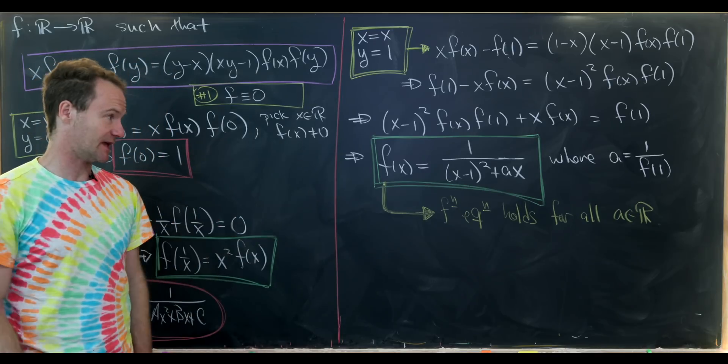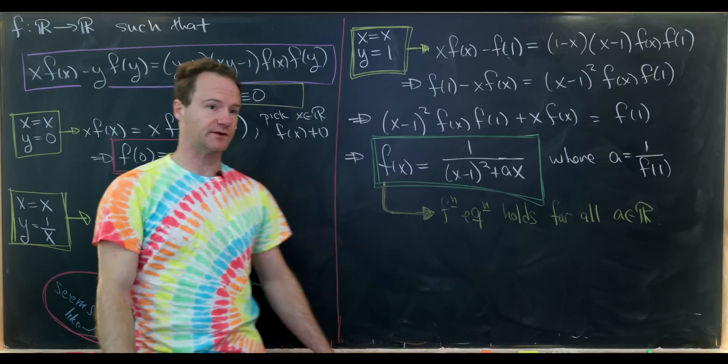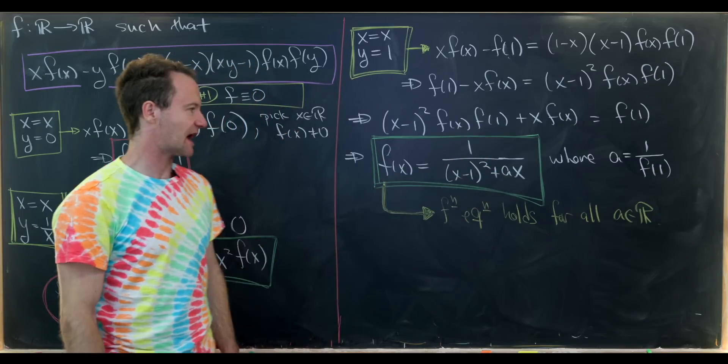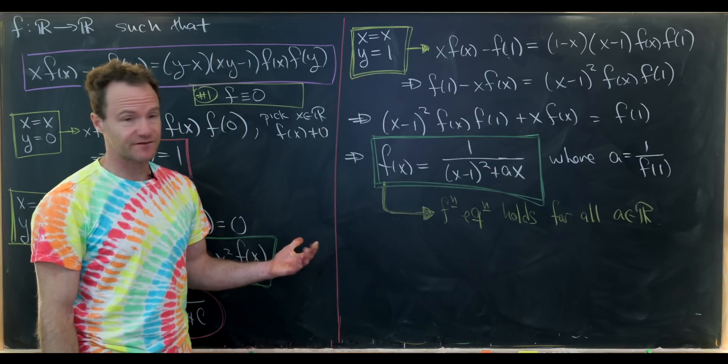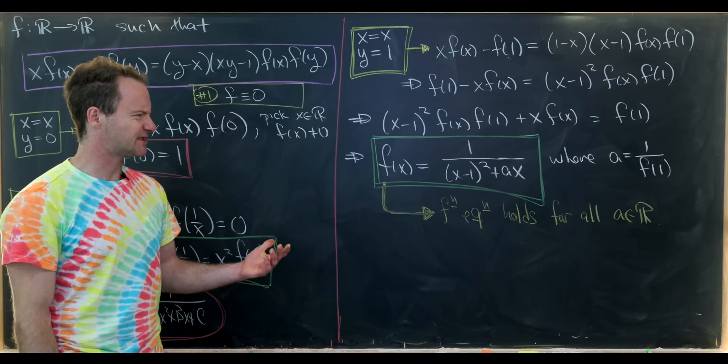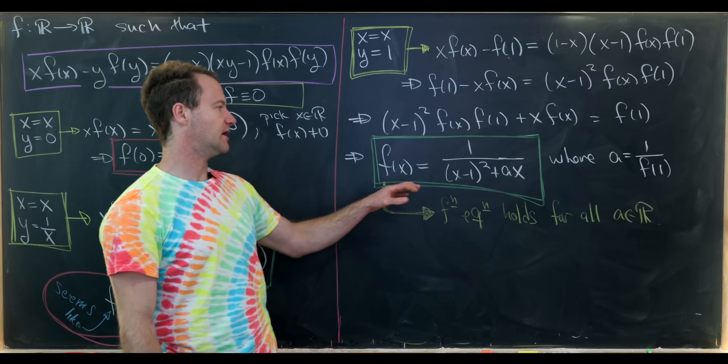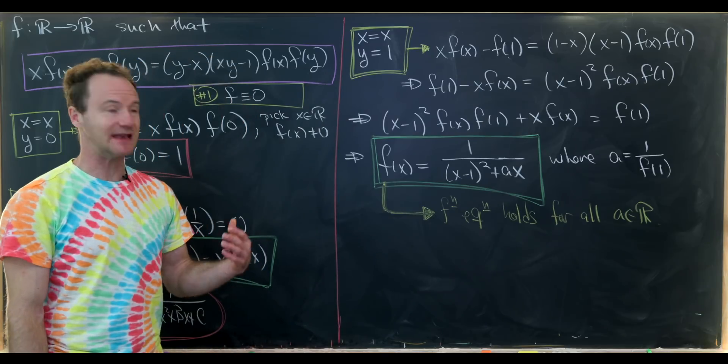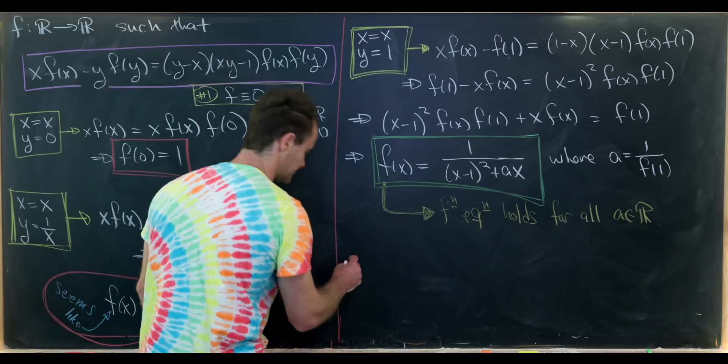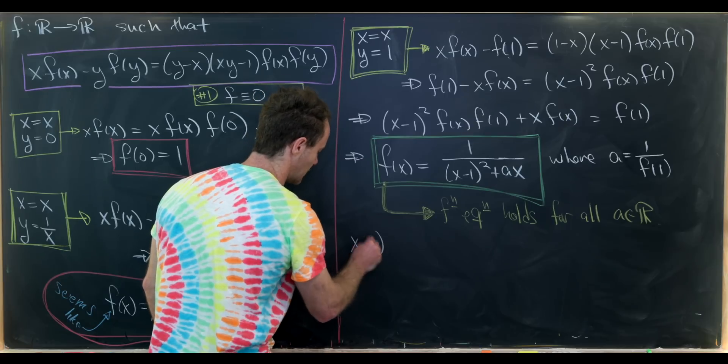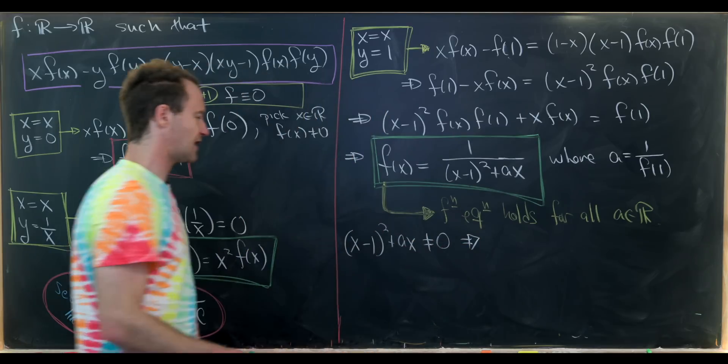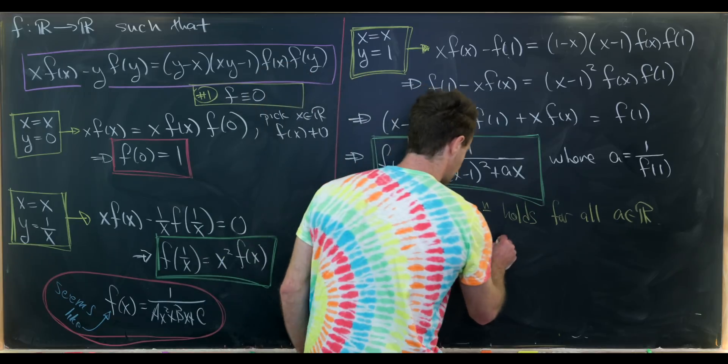Okay so does that mean that all of these are solutions? Well it kind of depends. Notice here we're saying our domain is all real numbers, but there's most definitely values of a that would not allow us to have all real numbers in the domain. For instance if a was equal to 0 then x equals 1 would not be in the domain. So we do not want this denominator to be equal to 0.